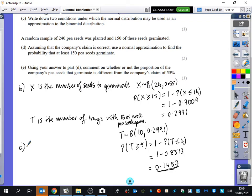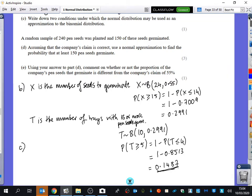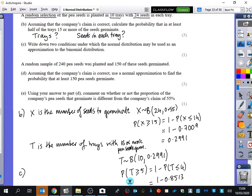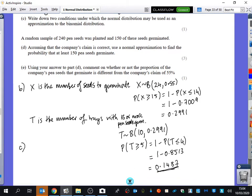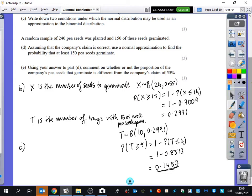Part C of the question then says, let's just double check in case I've missed any other information there. Have I missed any other information? No, it just says write down the two conditions under which the normal distribution may be used as an approximation to the binomial. So you need to say P is close to 0.5 and N is large. Those are the two things. You have to say both of them to get the mark.